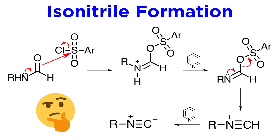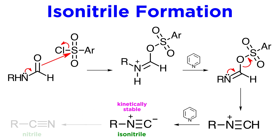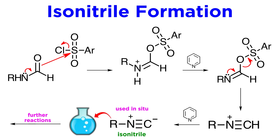Two questions may arise if you have been paying attention. Number one, if the isonitrile is so much less stable than the nitrile, why does it not convert? The answer is that it does, and the reaction has been studied both kinetically and thermodynamically. Suffice it to say that, although the reaction is spontaneous — meaning it has a negative delta G — the activation energy for the process is very high. The R group has to effect a 1,2-migration, and this is accompanied by severe distortions in the transition state. Thus, if you can form isonitriles at room temperature, they are quite stable kinetically. They can even be isolated, although they are well known among chemists for their incredibly foul odor, and thus are often used in situ, meaning formed and then used immediately without purification.